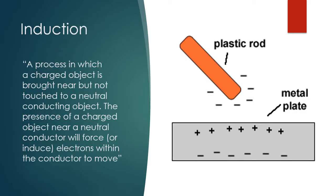Now let's look at how induction and electricity are related. Induction is a process in which a charged object is brought near, but not touching, a neutral object, and in the presence of that charged object the neutral object will become charged. For example, if we bring a negatively charged plastic rod near a neutral object, those negative charges attract the positive charges of the neutral object, causing the positive charges to come to the surface. This pushes all the negative charges away — since like charges repel — inducing a positive charge on that object.